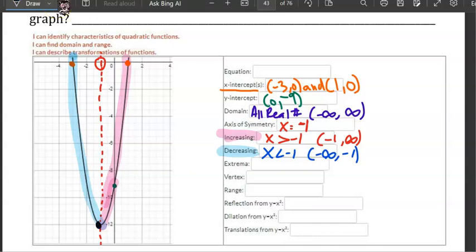The extrema is this point right here. It's a minimum, and it's at y equals negative 12. The vertex is the axis of symmetry, negative 1 comma the extrema, negative 12.